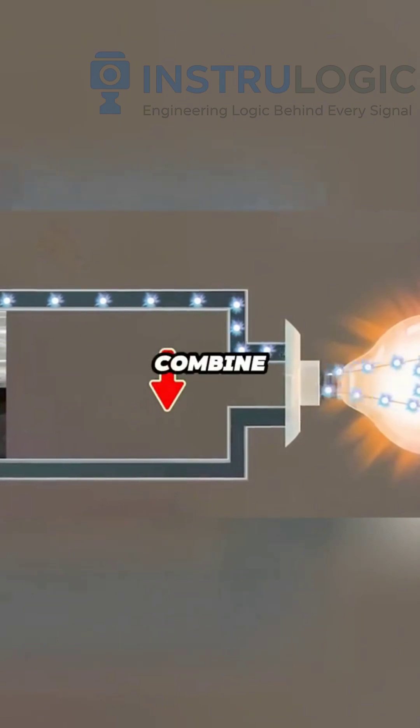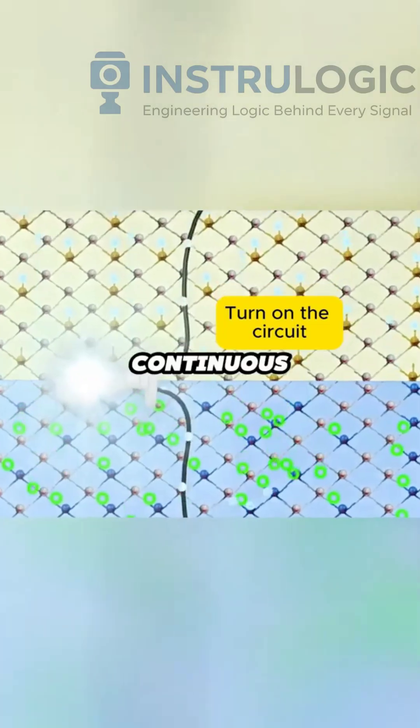The electrons then combine with holes in the p-type. This allows a continuous current to flow.